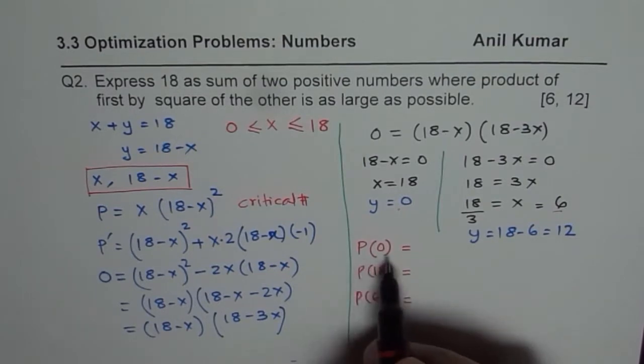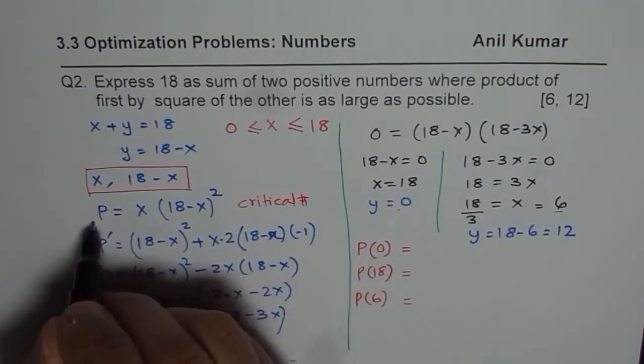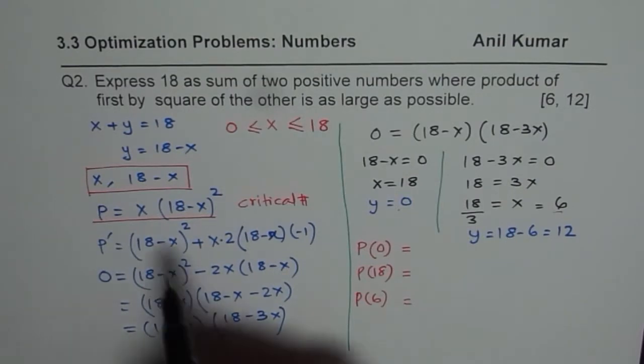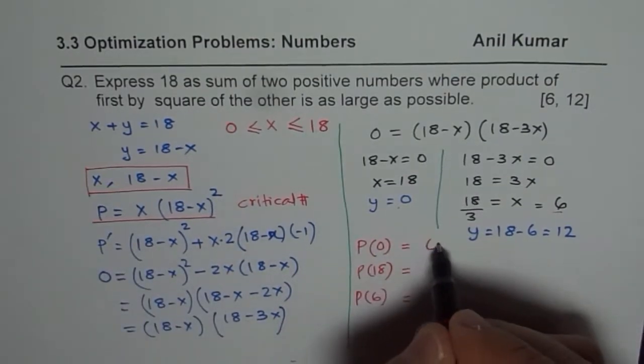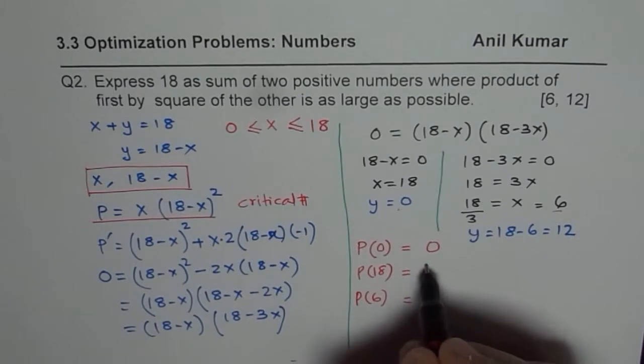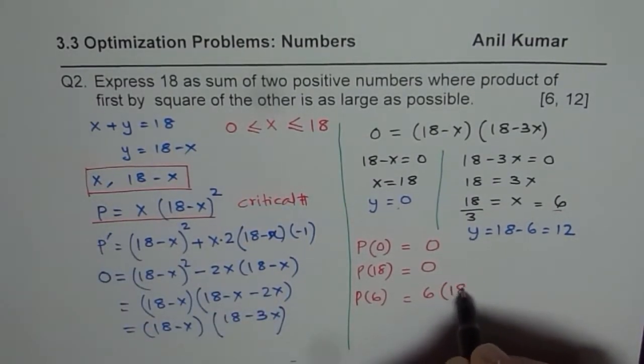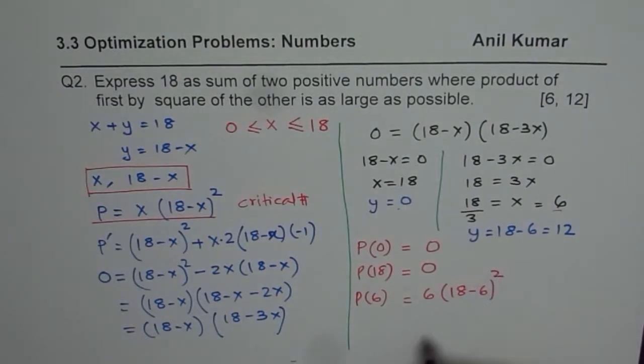Now what is P of 0? We will substitute these values in the given equation. If I write 0 for x I get 0. If I write 18 for x I get 0. But if I write 6 what do I get? I get 6 times 18 minus 6 whole square.